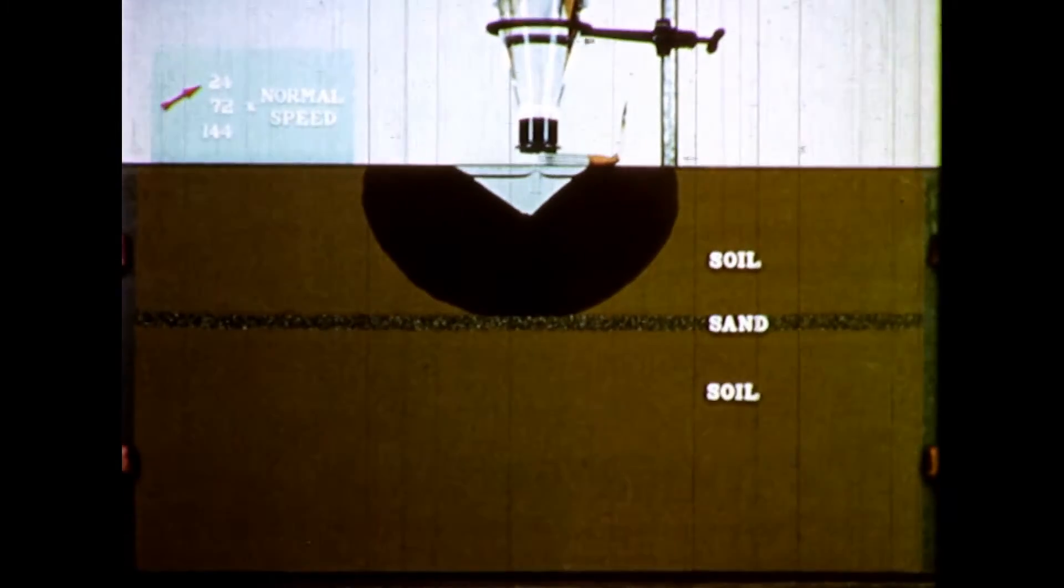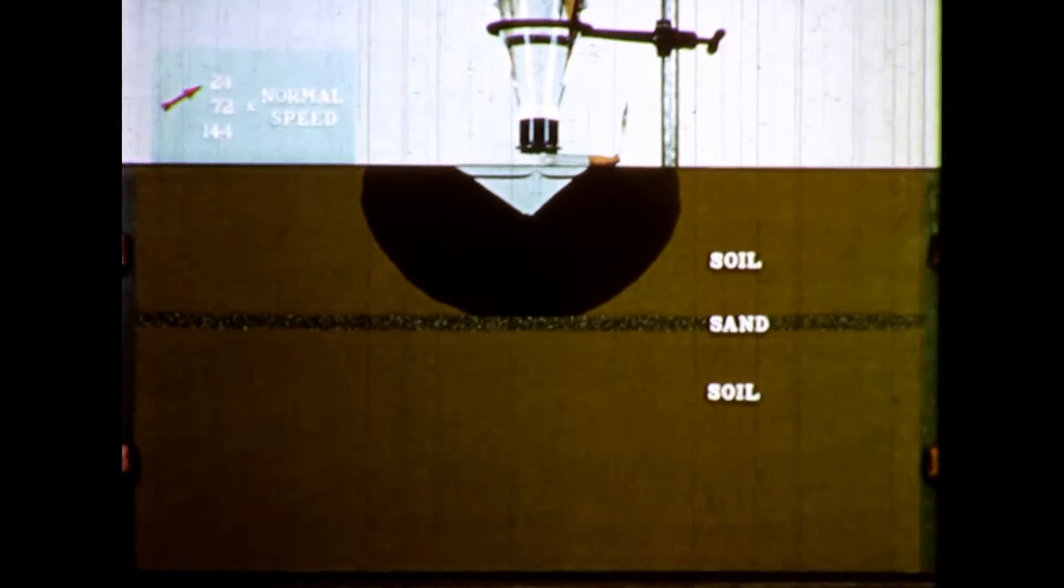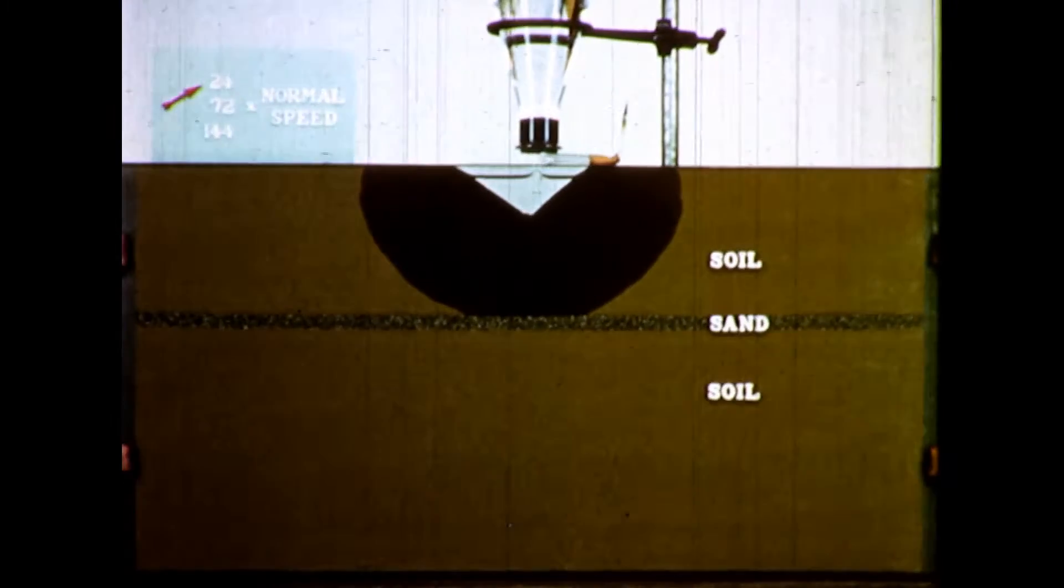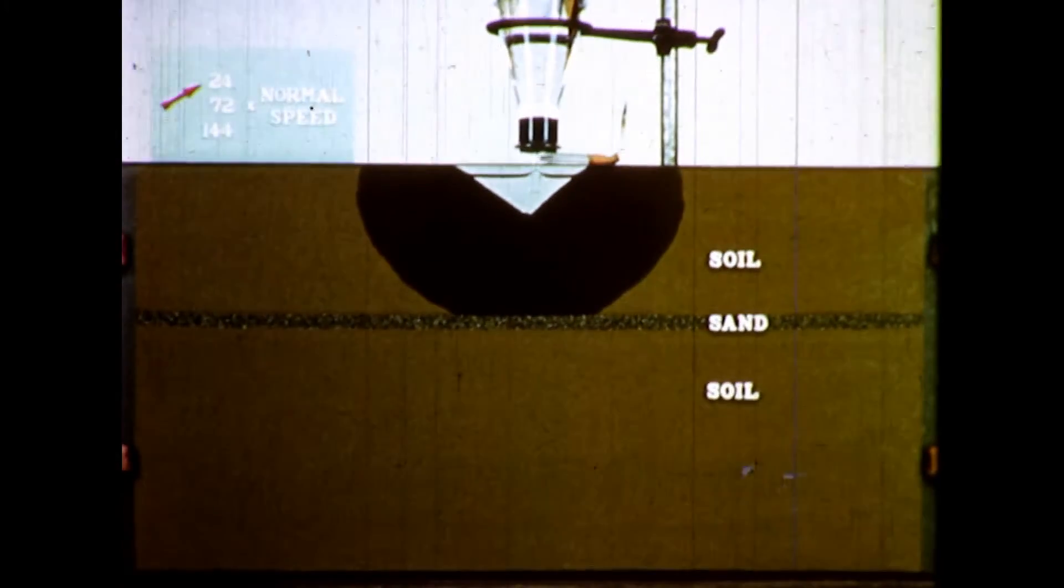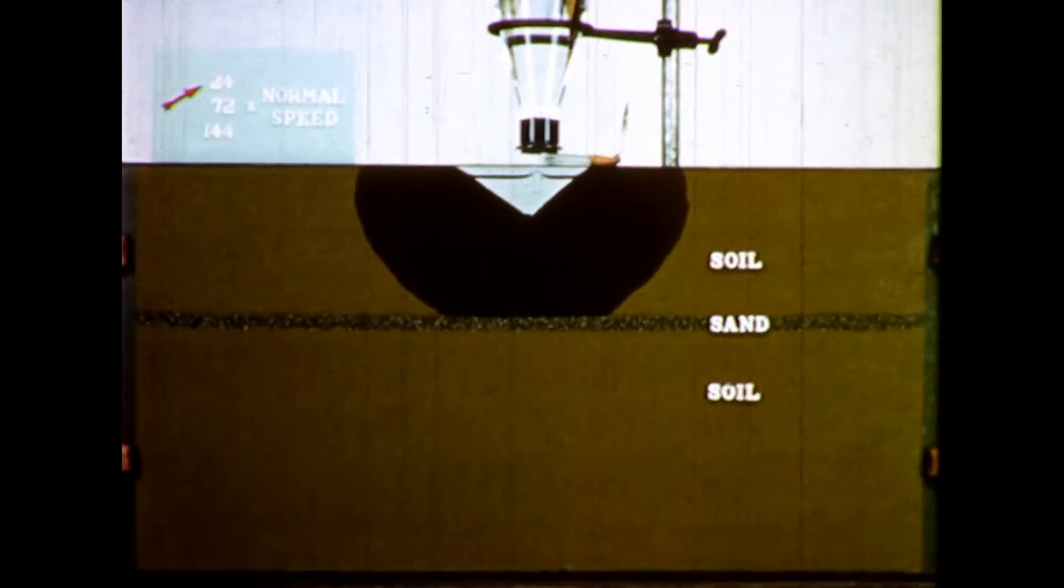The pores in the soil are like the pores in blotting paper used to soak up ink. The huge pores in the sand cannot hold water at the tensions which exist in the wetted soil above, so the water does not move readily into the sand.